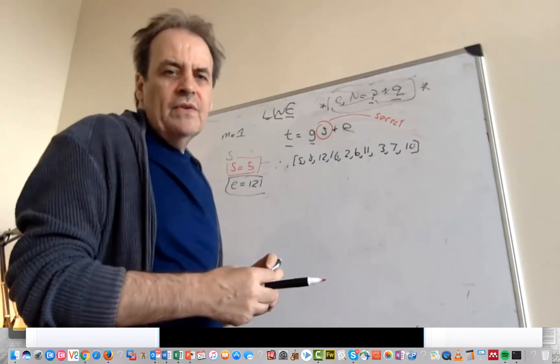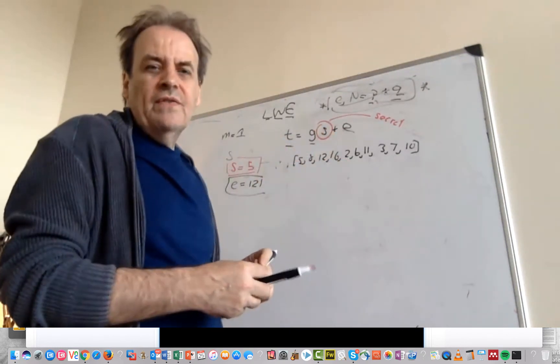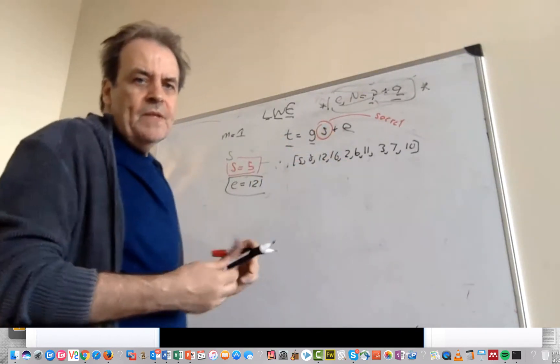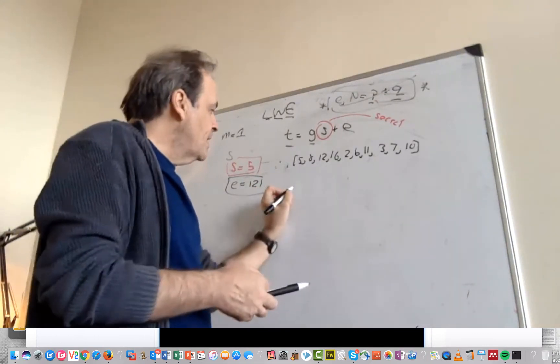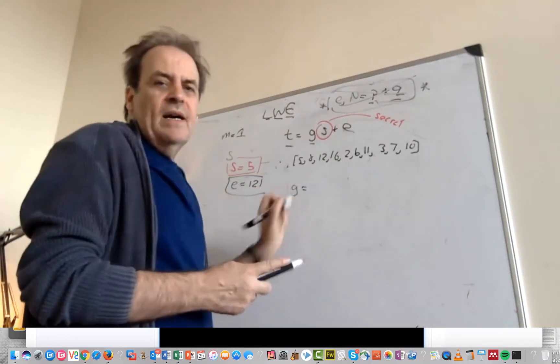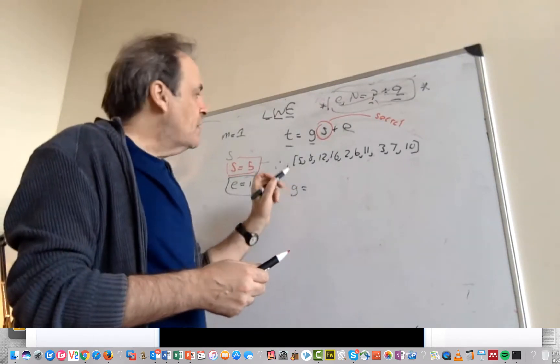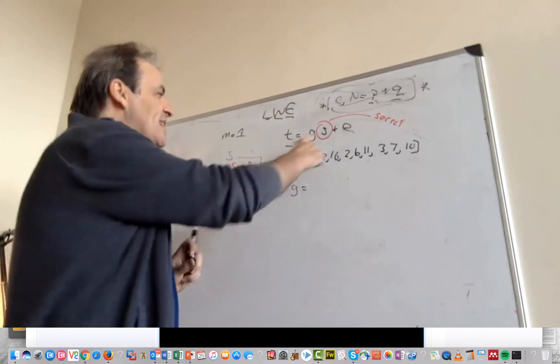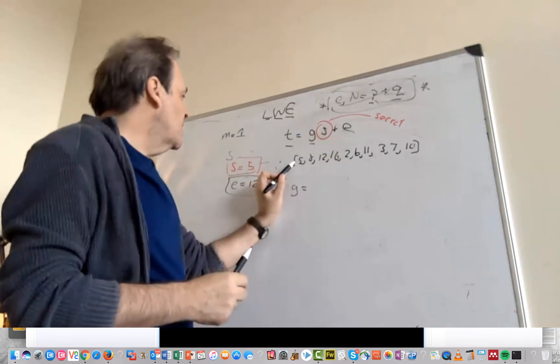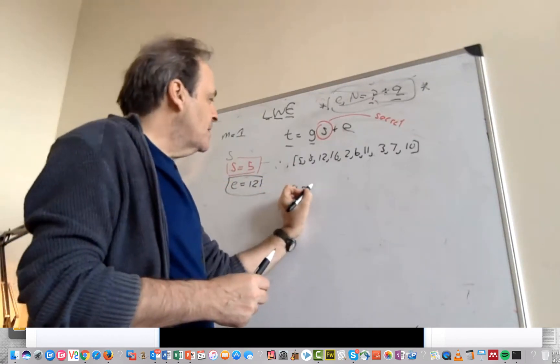So that's the value that we're going to use to be able to find out the value of T. So the first thing that we do is we create our public key. So our public key becomes the values of our random values times the secret plus E. So in this case we'll take 5 times 5 plus 12, so we end up with 37.